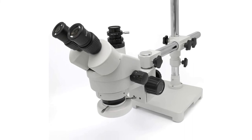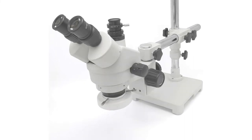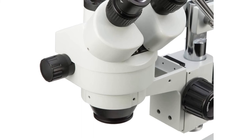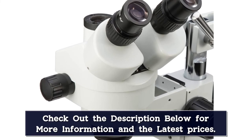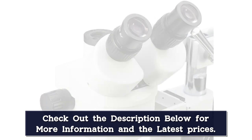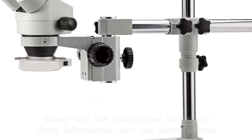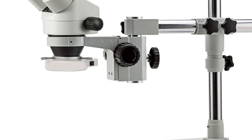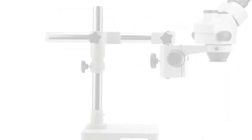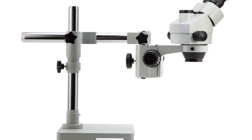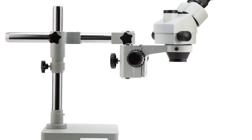The trinocular head is tilted at an ergonomic 45-degree angle to decrease eye and neck strain, includes a third port for an additional eyepiece or camera. Rugged construction with a sturdy metal base and swinging arm boom stand that allows for work with large objects. Includes a powerful 56-bulb LED ring light to flood the field of view with brilliant, shadow-free illumination cool enough for working with temperature-sensitive specimens.